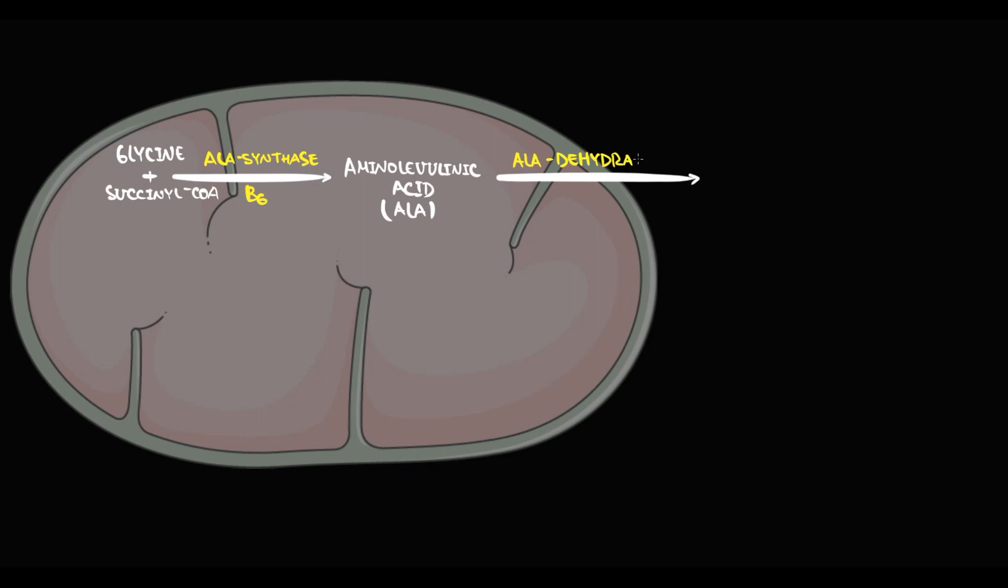Here we have mitochondria and the cytosol of erythroblast. The process of heme synthesis begins in the mitochondria of erythroblast, where glycine reacts with succinyl-CoA with formation of delta-aminolevulinic acid, so-called ALA. The most important feature is that this reaction is catalyzed by the specific enzyme called ALA synthase. And ALA synthase uses as cofactor vitamin B6, so-called pyridoxal phosphate. ALA then moves to the cytoplasm, where it undergoes conversion by ALA dehydratase into porphobilinogen.